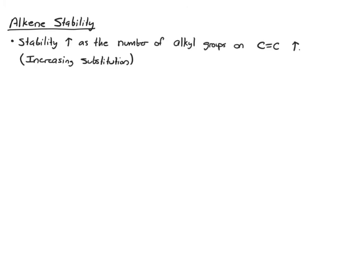The first is that stability increases as the number of alkyl groups on the double bond increases. This is just increasing substitution increases stability, and this is a form of hyperconjugation like you learned about with carbocations.